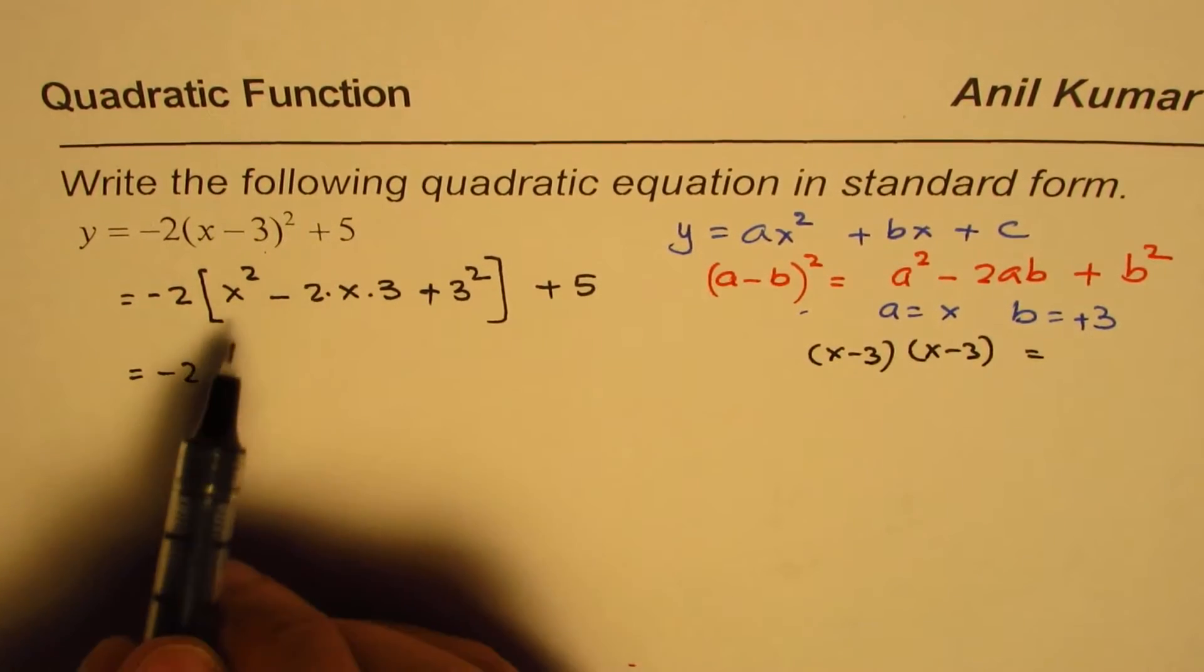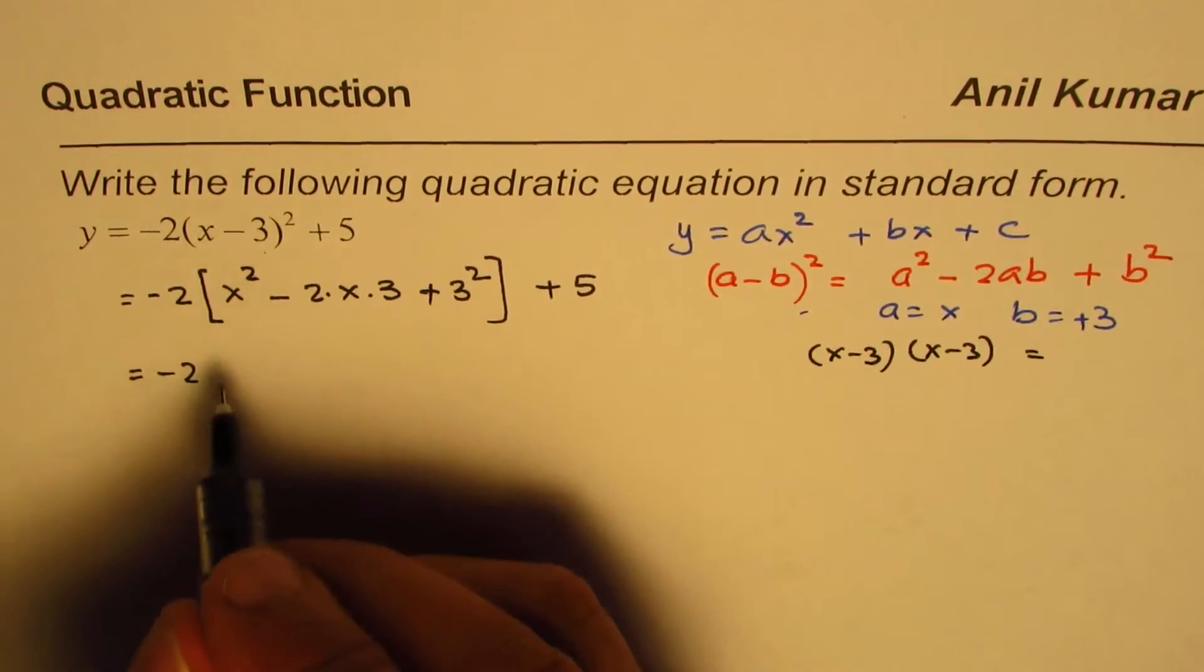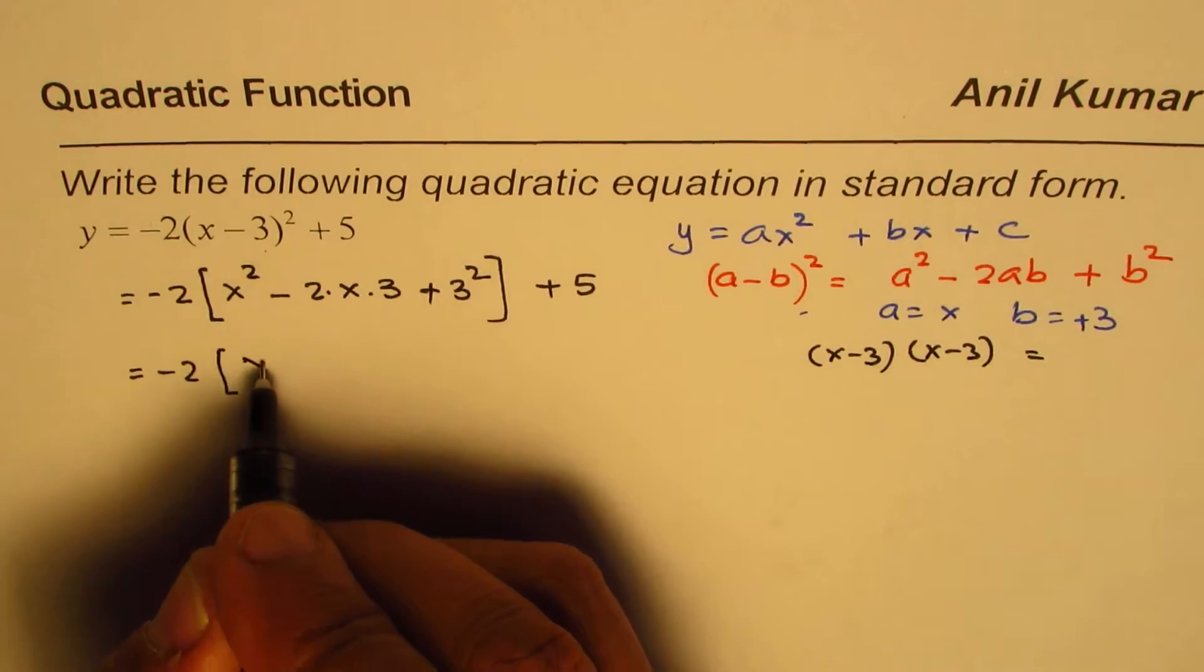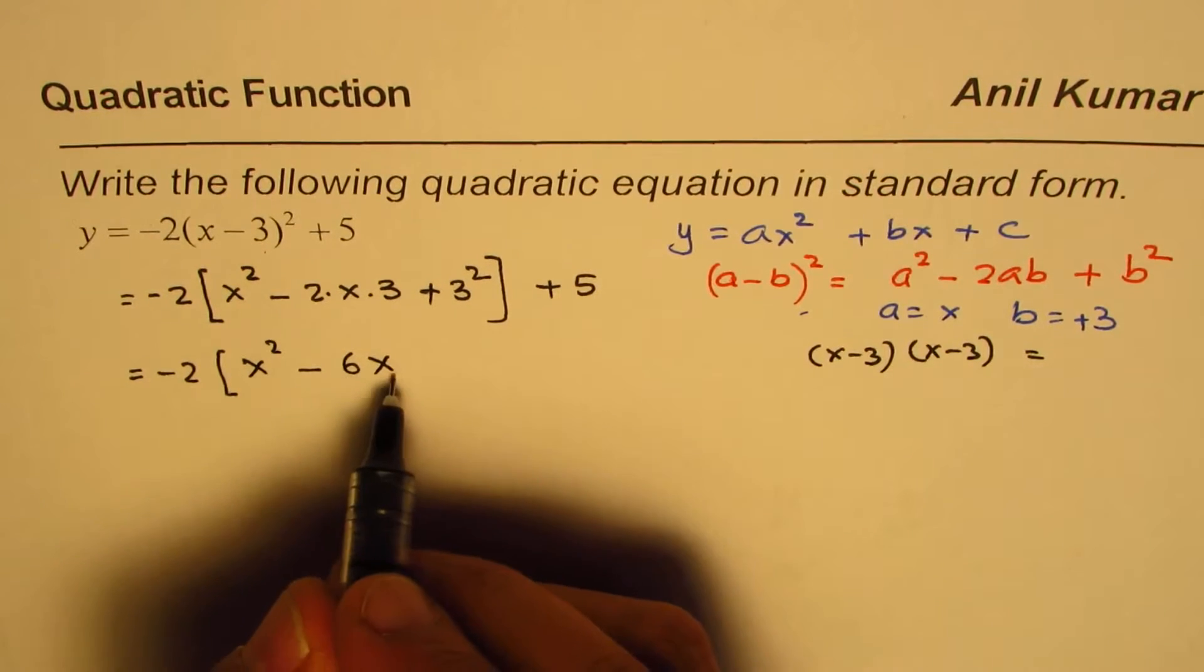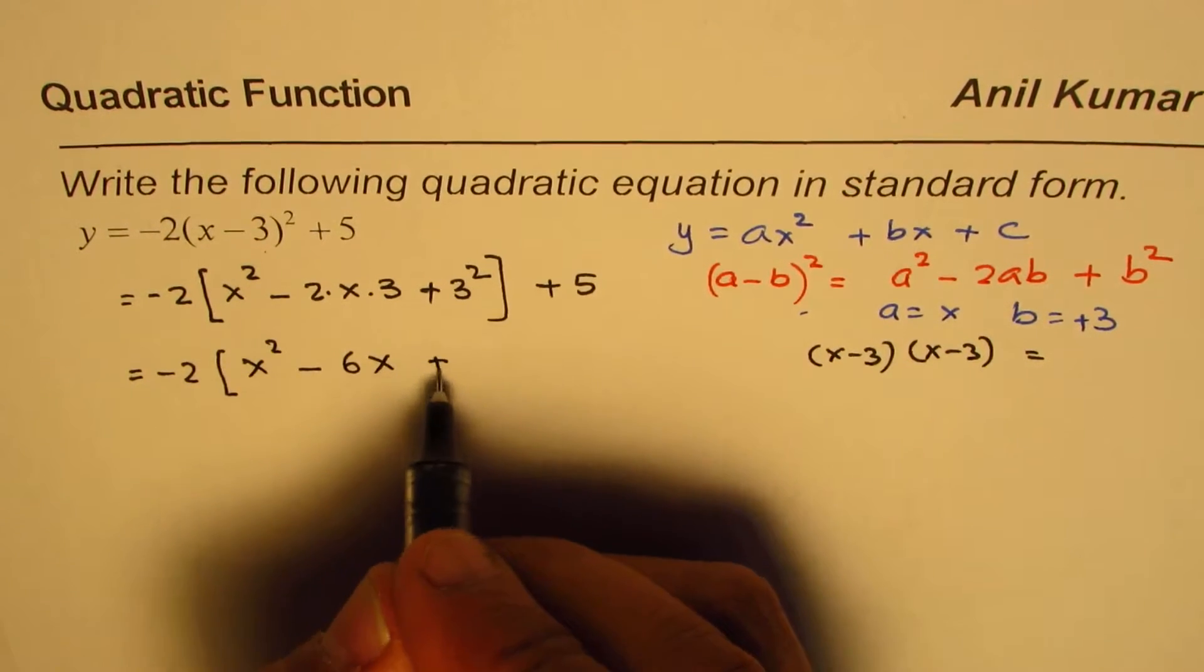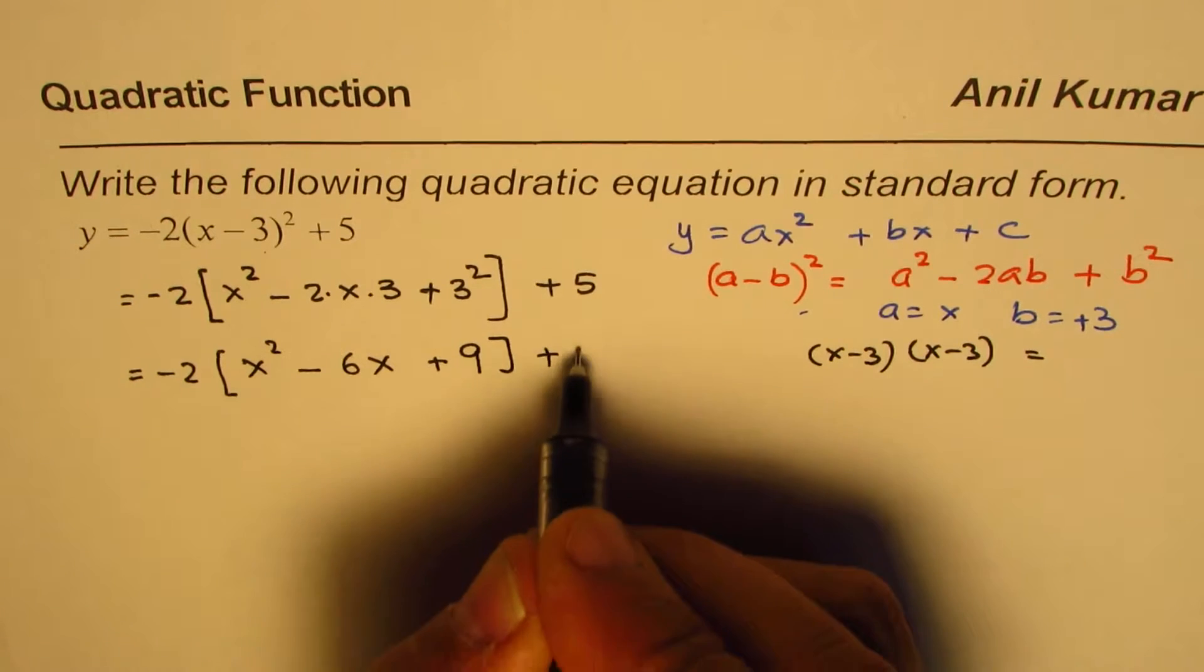Let us start applying the formula. So we have x square minus 6x. Always write numbers before the variable, plus 9 plus 5.